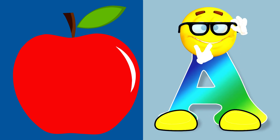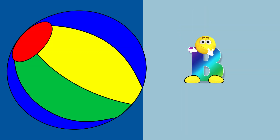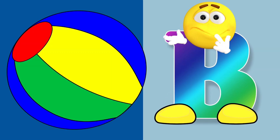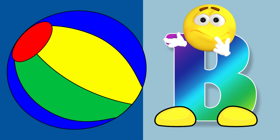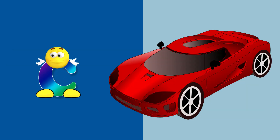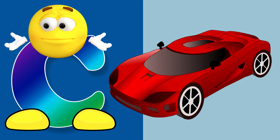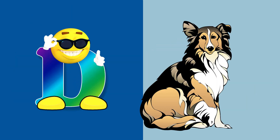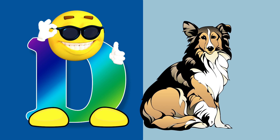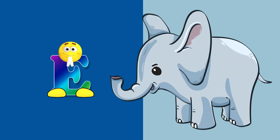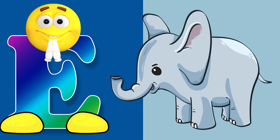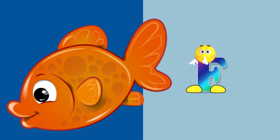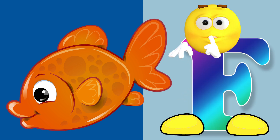A for apple. B for ball. C for car. D for dog. E for elephant. F for fish.